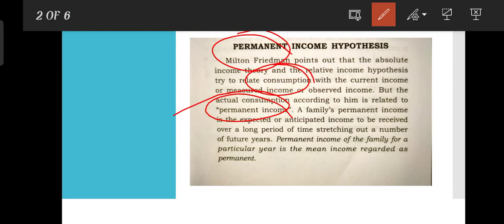Permanent income is the expected or anticipated income to be received over a long period of time, stretching out over a number of future years. The permanent income of a family for a particular year is the mean income regarded as permanent — that is, the mean income they expect to receive in future years.